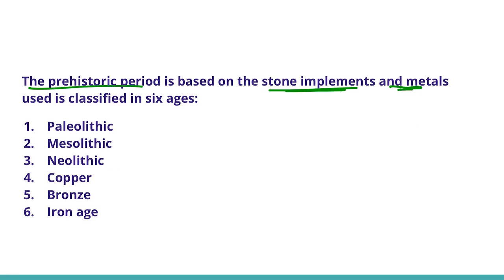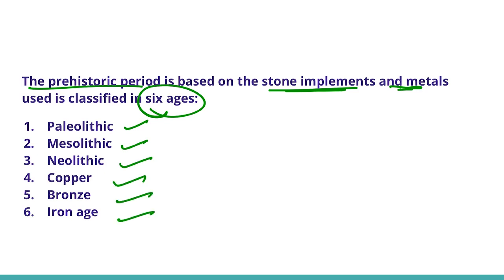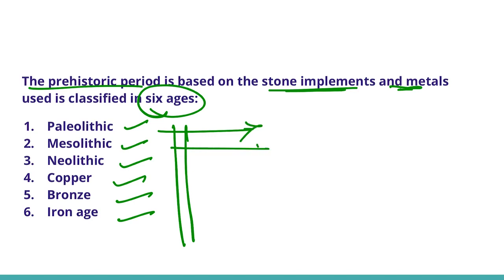The prehistoric period is classified into six ages depending on the usage of tools and metals. Those ages are the Paleolithic age, Mesolithic age, Neolithic age, Copper age, Bronze age, and Iron age. In this session we will be discussing only about the three stone ages: Paleolithic, Mesolithic, and Neolithic.